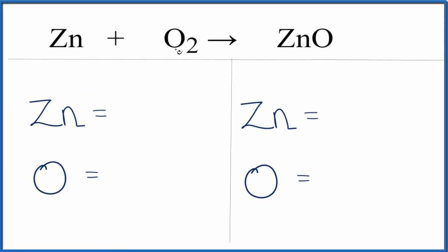In this equation, we have zinc plus oxygen gas. That gives us zinc oxide. This is a combination reaction.